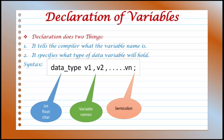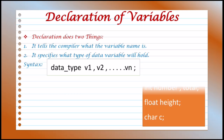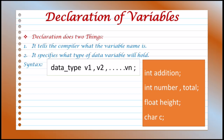A declaration statement must end with a semicolon. For example: int addition; int number, total; float height; char c. These are valid declarations of variables. Here, int, float, and char are keywords used for datatypes, and addition, number, total, height, and c are the identifiers used as variable names.